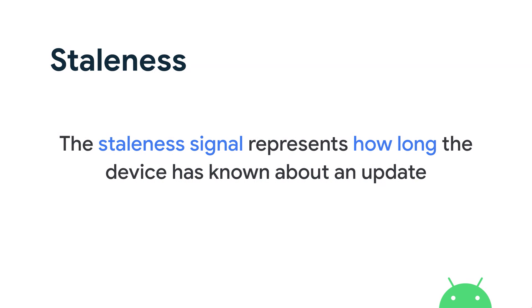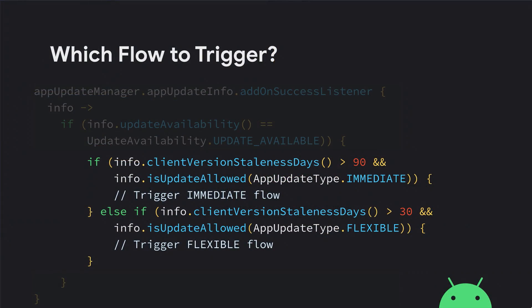The second signal is app staleness. App staleness tells you how long the device has known about an update being available for the user. If the user has had an out-of-date app for a longer time, the staleness will be higher, and the user will need to update more eagerly. In this example: if staleness is greater than 90 days, I'm triggering the immediate flow; if between 30 and 90 days, I'm triggering the flexible flow. And implicitly, if the app is less stale than 30 days, I'm not triggering an in-app update at all — because sometimes you don't want to notify users unnecessarily if the app is already fresh enough.